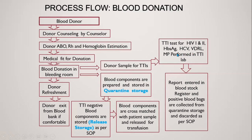Testing is done for HIV, HBs, HCV, VDRL, and malaria in the TTI lab, and the report is entered in the blood stock register. Positive blood bags are collected from quarantine storage and discarded as per SOP. The donated blood is then converted into blood components, prepared and stored in quarantine storage, and then TTI-negative blood components are stored in release storage as per SOP.